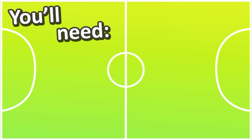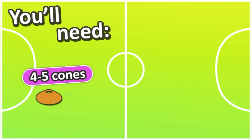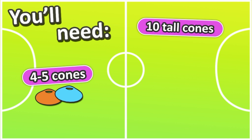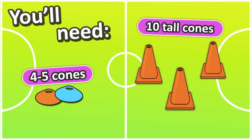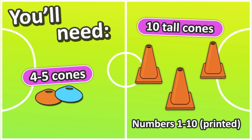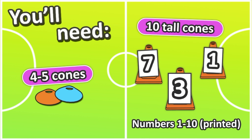For this game you're going to need four or five small cones — one cone for each team. You're also going to need ten tall cones. Your teacher is going to print out numbers 1 to 10 and each of those tall cones needs one of those numbers stuck to them, so each tall cone needs a number between 1 and 10.